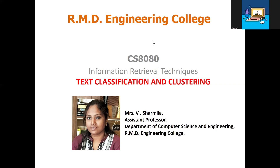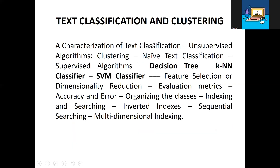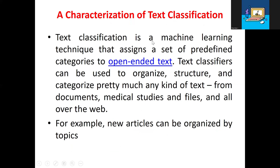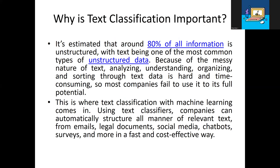In this session, we are going to discuss about Text Classification. Text Classification is a machine learning technique that assigns a set of predefined categories to open-ended text. It is used to organize, structure, and categorize documents, medical studies, files — everything in a categorized format. For example, news articles can be organized by topic. Importantly, 80% of all information is unstructured and the remaining data is structured.